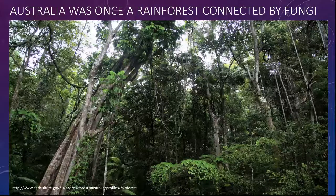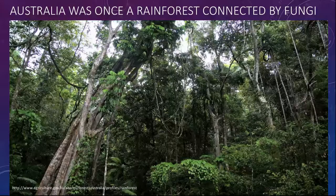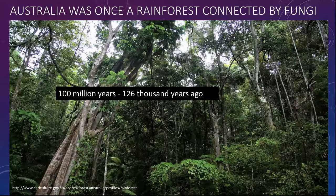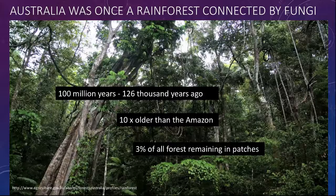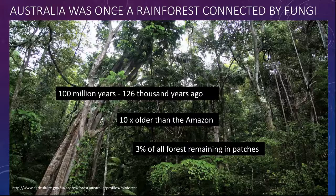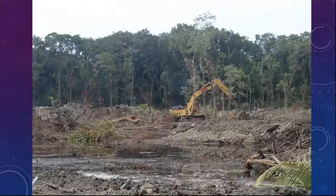All of this, once created, meant the ecosystem was flourishing so much that it covered the entire of Australia with rainforests — the pinnacle of biodiversity. Up until about 100 million years this was happening, and the Australian rainforest was actually 10 times older than the Amazon. Now there is only 3% of all that forest remaining as rainforest, and in patches. This connected underground network has been disturbed, cut and damaged.